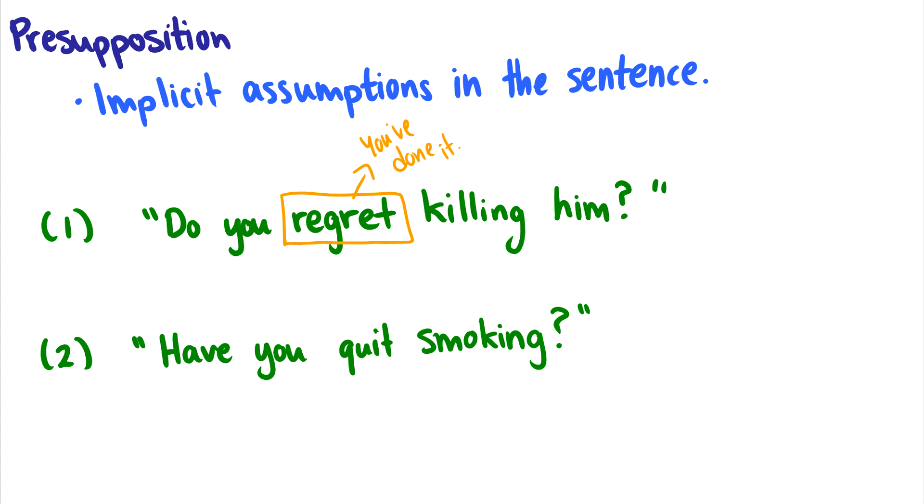So this is why in courts, you can't ask these leading questions, these presupposing questions like, do you regret killing him? You have to ask, did you kill him? Because in a panic, you can say yes or no, and not realize that the sentence leads you to pleading guilty, regardless of how you answer it. The only correct way to answer this question was, I did not kill him. But that's so much harder to come up with than just yes or no.